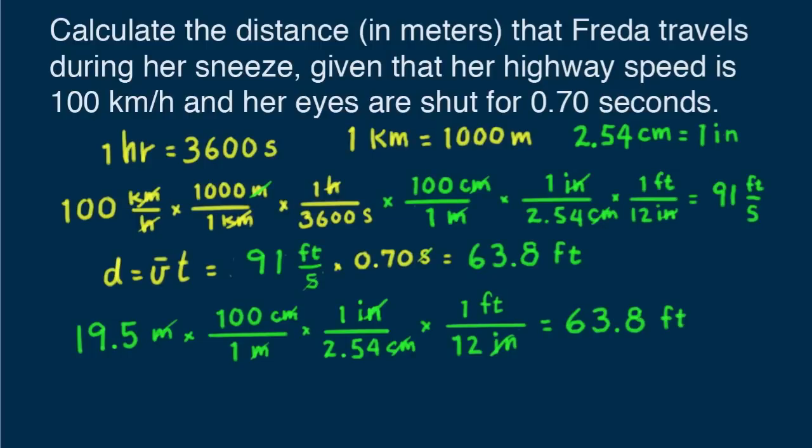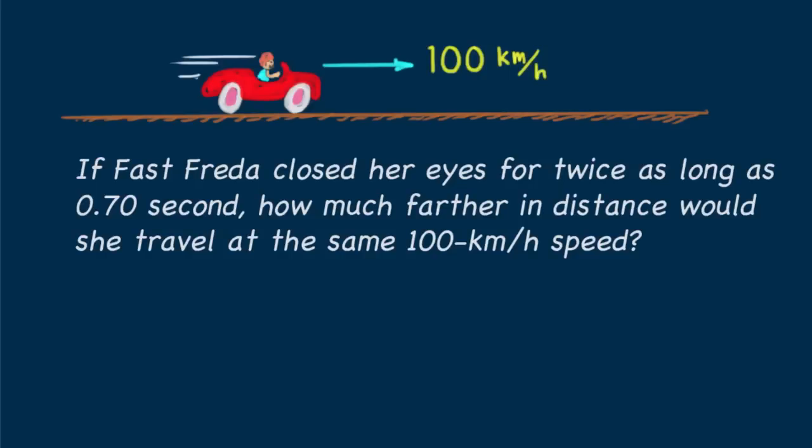I want to leave you with a question. If fast Freda closed her eyes for twice as long as seven hundredths of a second, how much farther in distance would she travel at the same 100 kilometer per hour speed? Maybe you can use an equation to guide your thinking? Until next time, good energy.